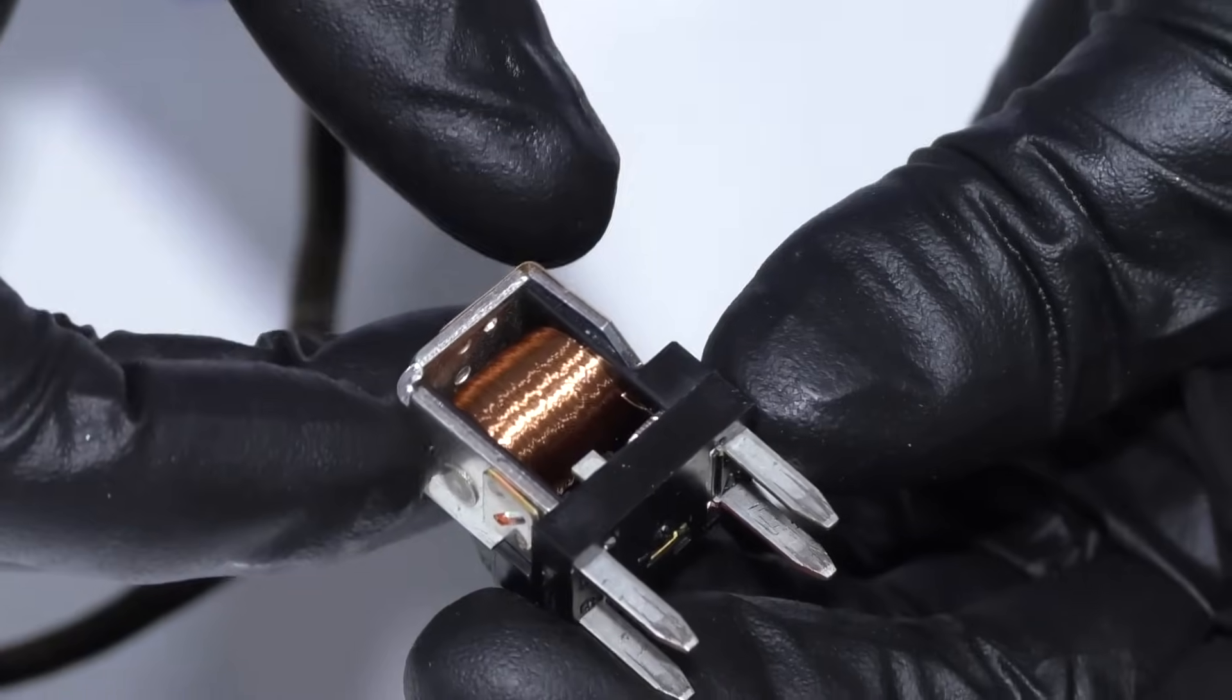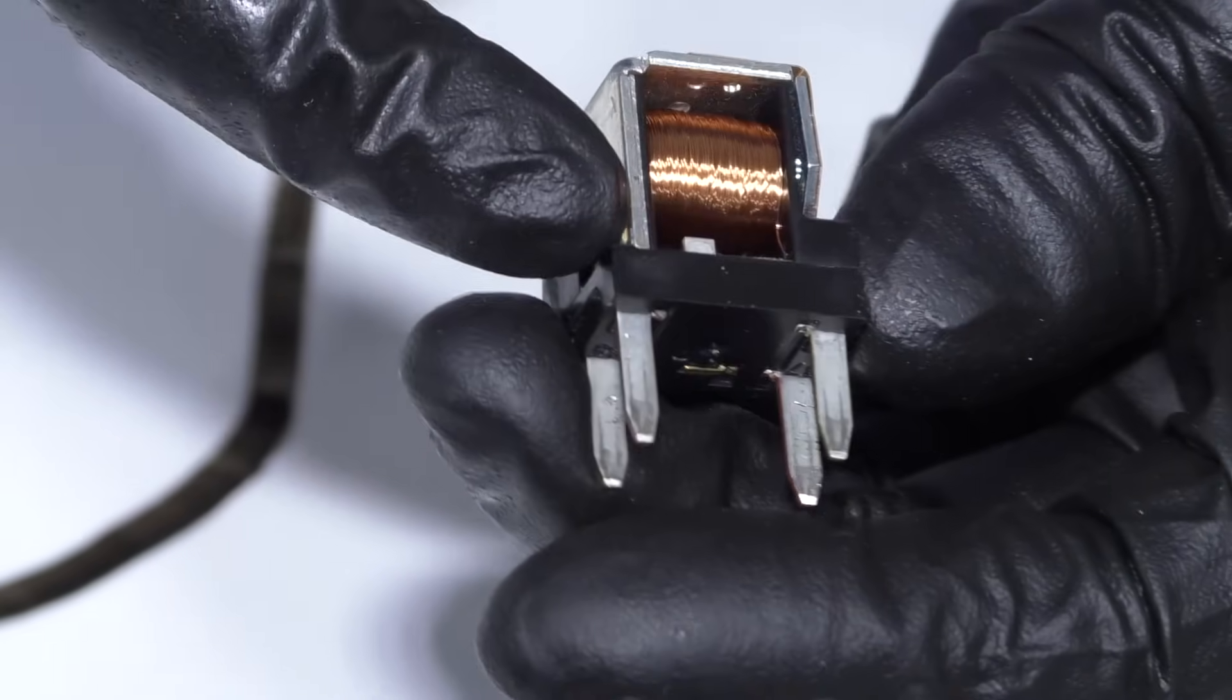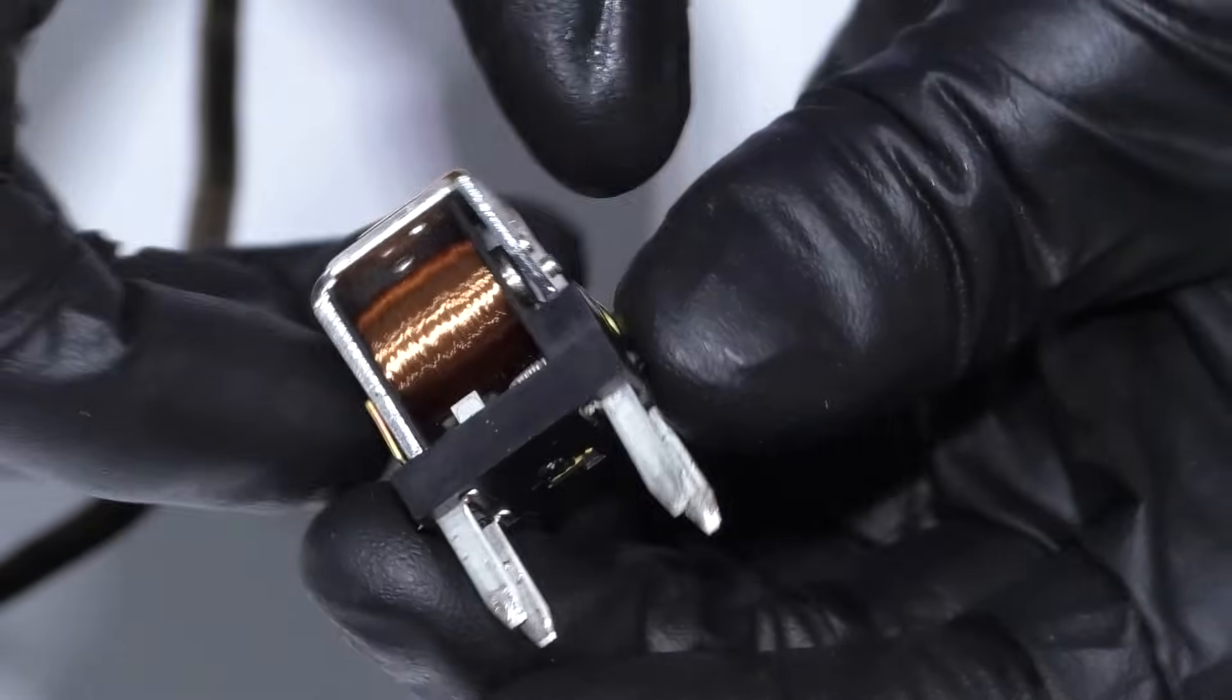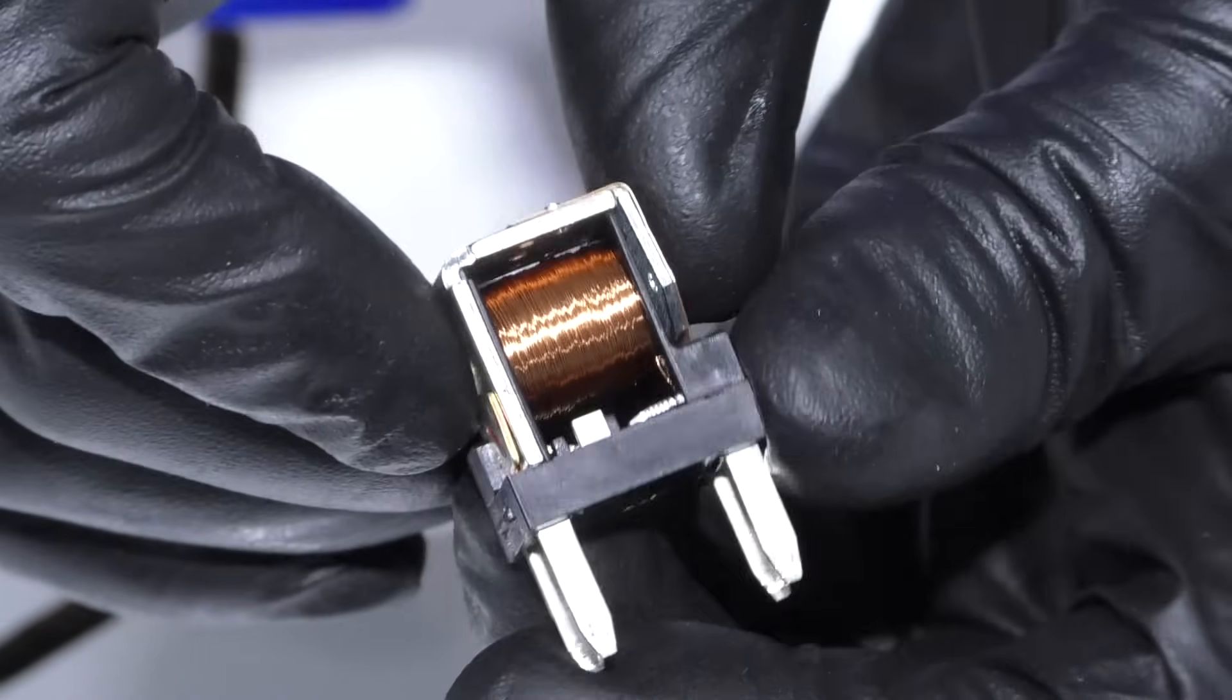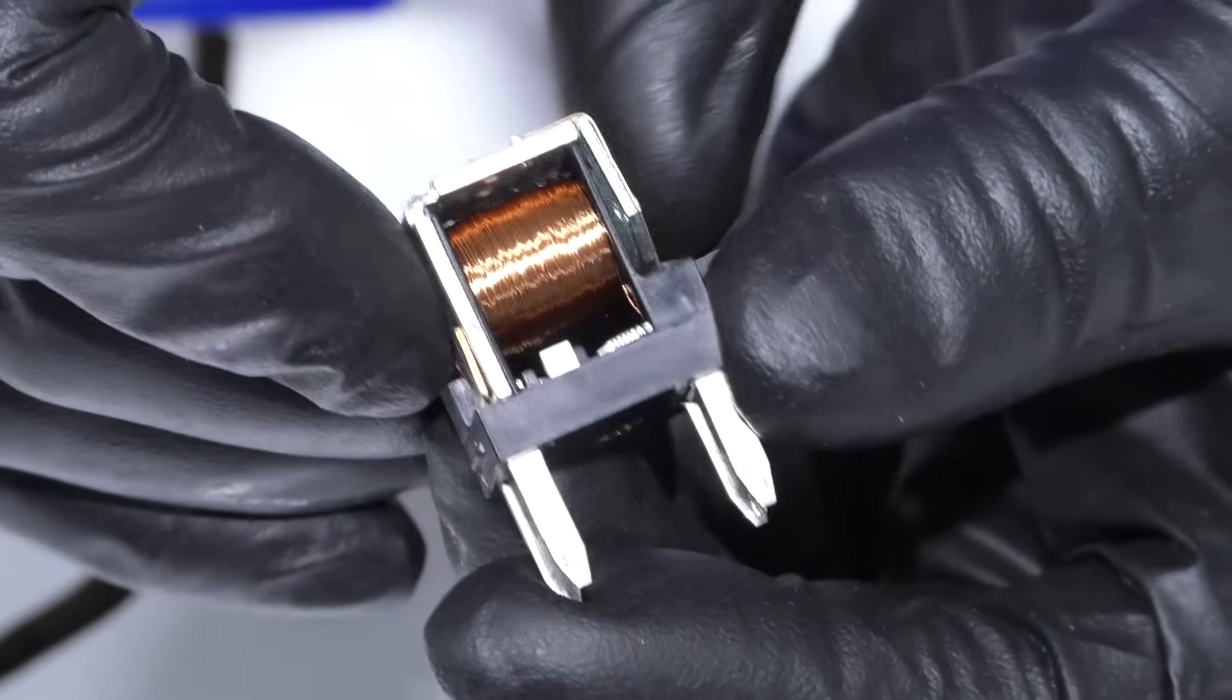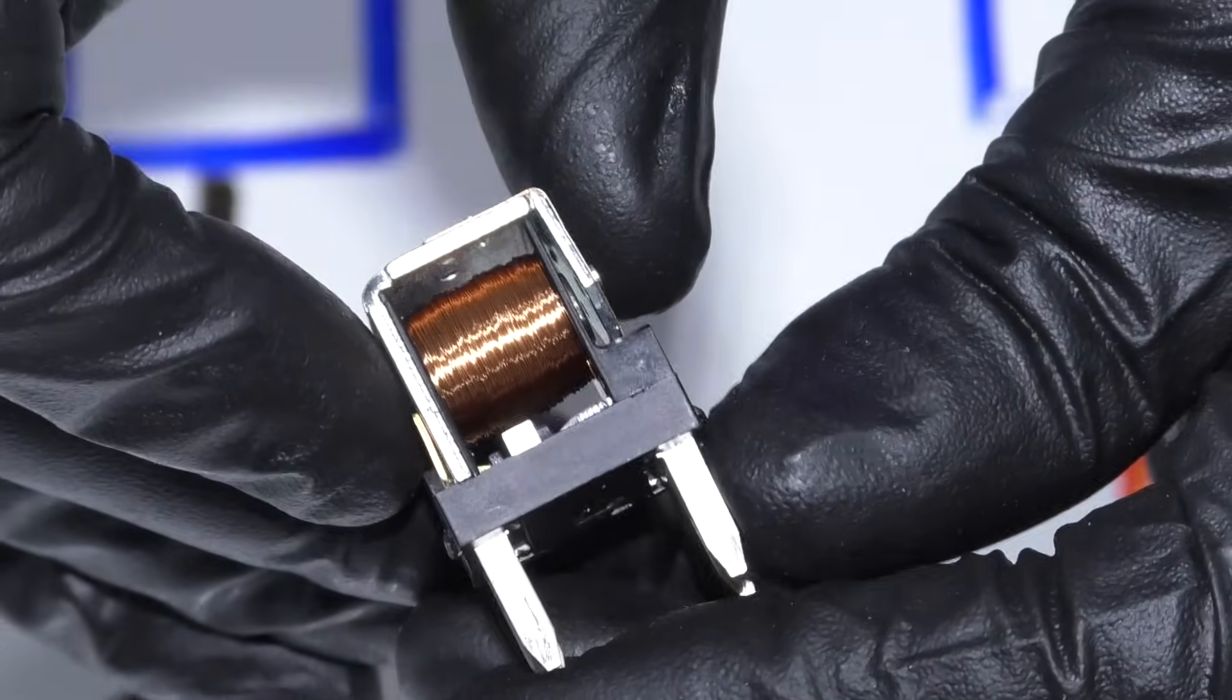Here's a relay with the cover off. You can see the windings for the electromagnet, and this is the lever right here. So if you pulled the cover off and had this hooked up and you pushed on that, that would activate that lever right there, and that's how it works.